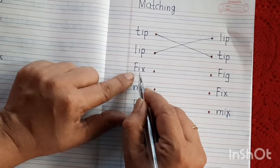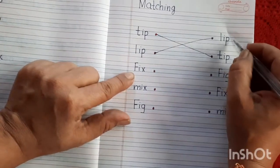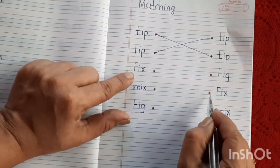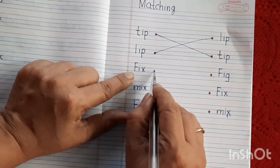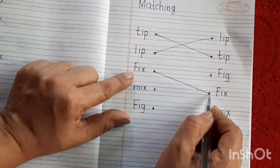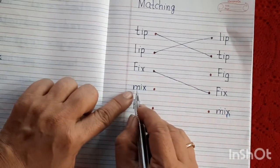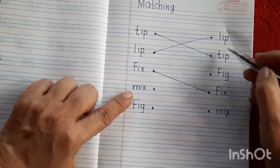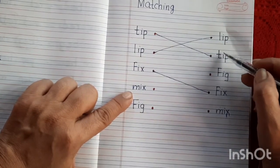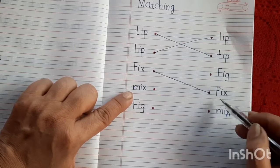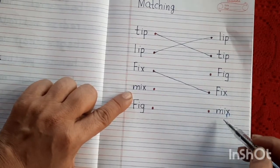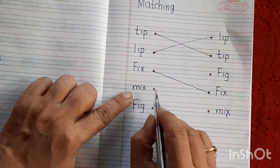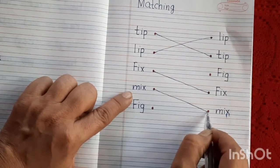F-I-X, fix. Where is fix this side? Find out fix, here, here is a word fix, so match fix to fix. Next is M-I-X, mix. Where is mix, find out mix, is it no, is it no, is it no, is it yes, this is M-I-X, mix, so let's match it.